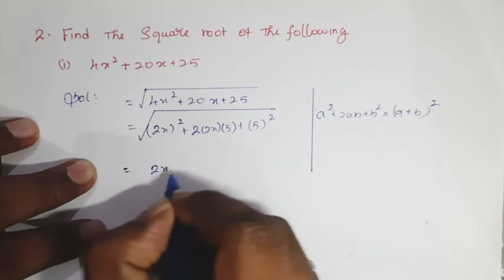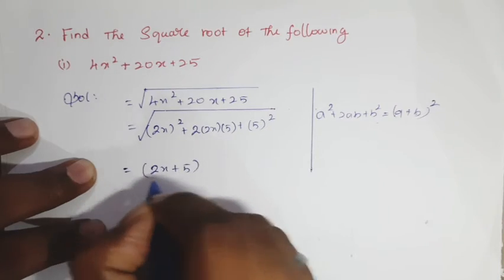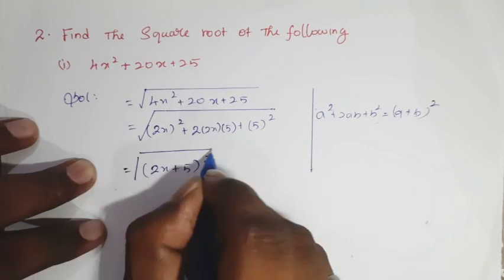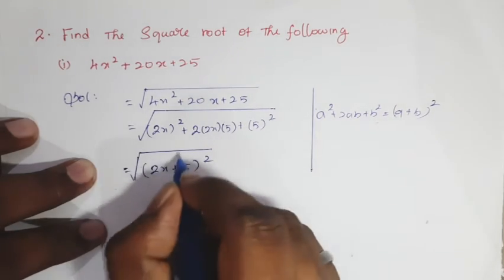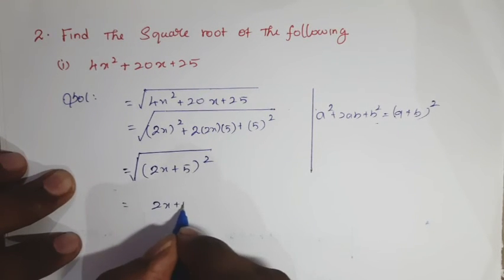So a equals 2x and b equals 5, giving us (2x + 5)². Taking the square root, the square and square root cancel, so we get 2x + 5.